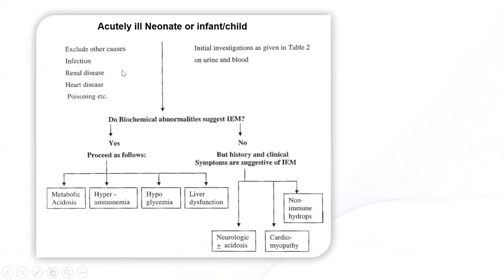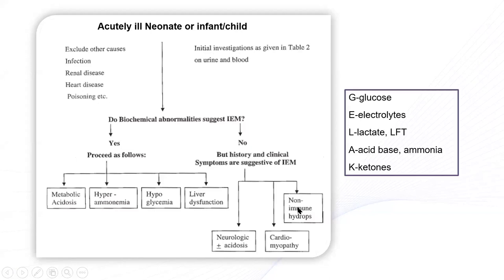This is a simple algorithm for approaching acutely sick children. IEMs are not the number one diagnosis — one has to exclude other more common diagnoses, but it has to be done side by side; you cannot set IEMs aside. If you suspect IEM, try to put them into clinical presentation types — whether this is an acidosis group, hyperammonemia, hypoglycemia, liver dysfunction, or other. The main investigation that will guide us is the G-LAC: glucose, electrolytes, lactate, liver function, acid-base, ammonia, and ketones. G-LAC is a good mnemonic.